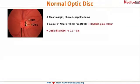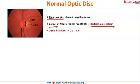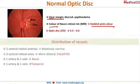When looking at the optic disc, the margin needs to be very crisp and sharp. If the margin is blurred, it indicates disc edema — that is papilledema. The color is another important feature: a healthy neuro-retinal rim is reddish-pink in color. The normal cup-disc ratio is 0.3 to 0.6 to 1.